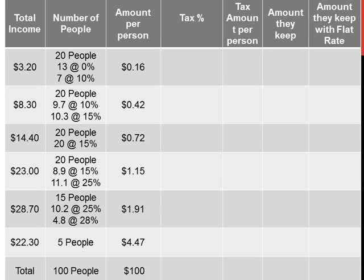Let's look at the first three columns. The total income in the first column is the amount of money made by the bottom 20% of the people. That is saying the bottom 20% of income earners in America earned 3.2% of all income. So 20 people made $3.20, which is about 16 cents per person on average. The next 20% earned $8.30, which is 42 cents each. The next groups earned 72 cents each, $1.15 each, $1.91 each. And the top five people earned $4.47 each.